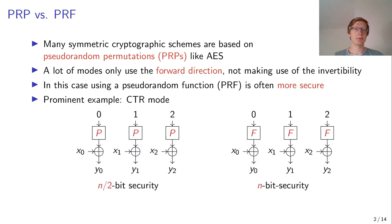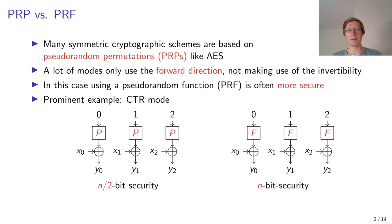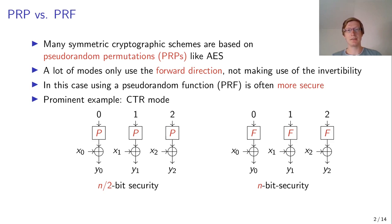A prominent example of this is counter mode. If we use a PRP, we get birthday bound security of n over 2 bits. But if we use a PRF instead, we get full n-bit security. Here we assume that we have a perfect PRF, but it still shows that PRFs are much more suitable to this construction than the PRP is.